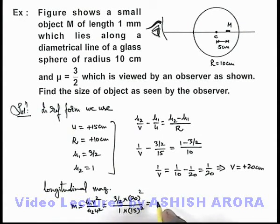On simplifying we are getting it to be 1.5 into 400 by 225. On further simplifying we'll get it to be 8/3.